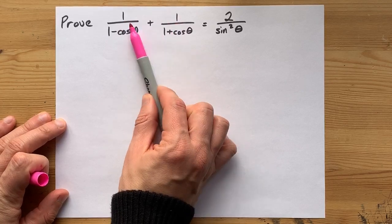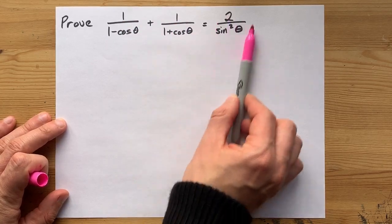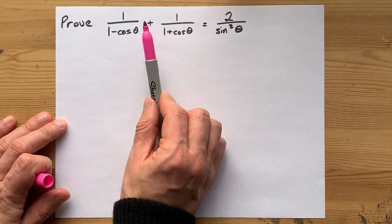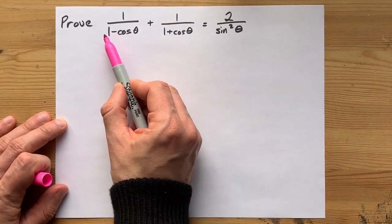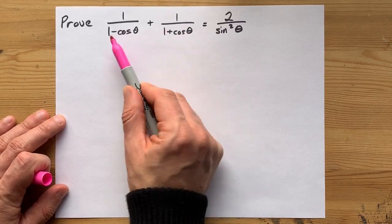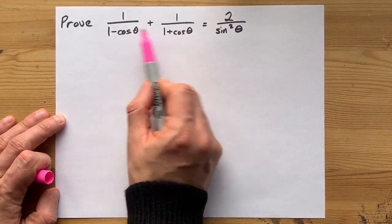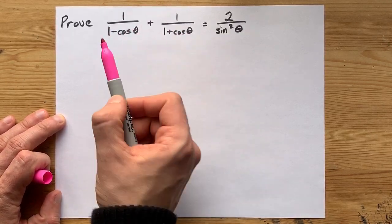First of all, we need to make two fractions into one single fraction, and we can't add two fractions together without a common denominator. Now, 1 minus cosine and 1 plus cosine are not the same thing, and we can't really turn one into the other without multiplication.